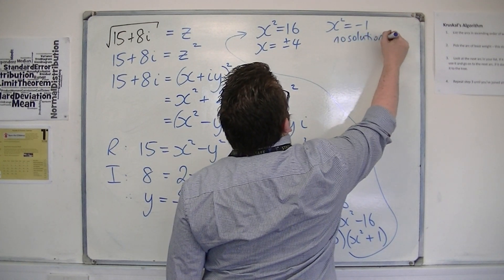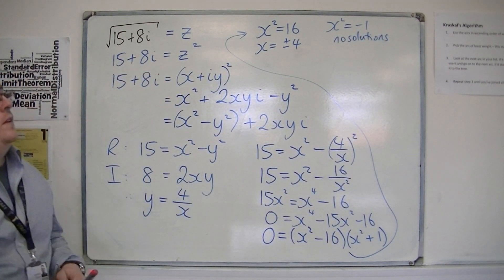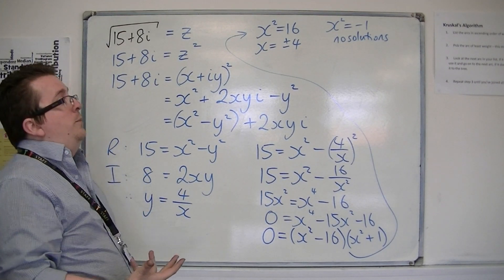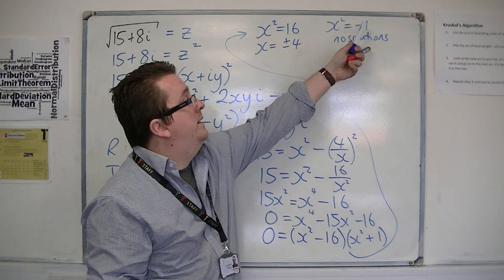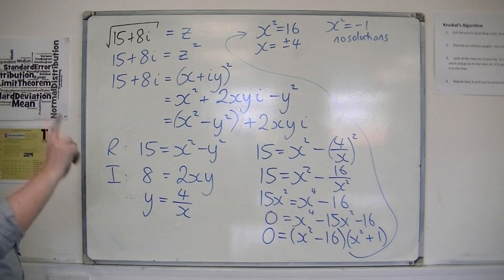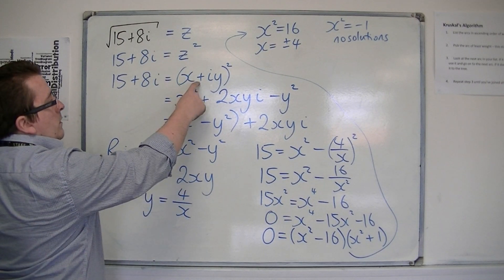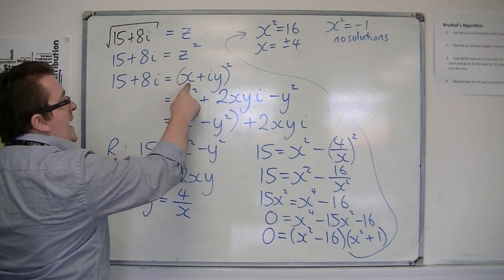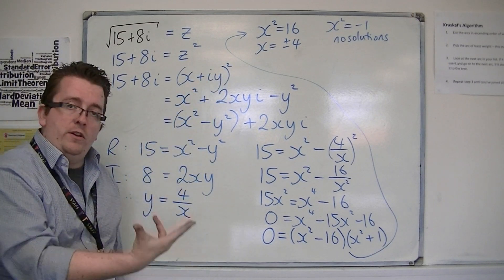Of course, we know that x would have to be plus or minus i in this case. But our initial reasoning for putting in x plus iy was that x and y are both real numbers.